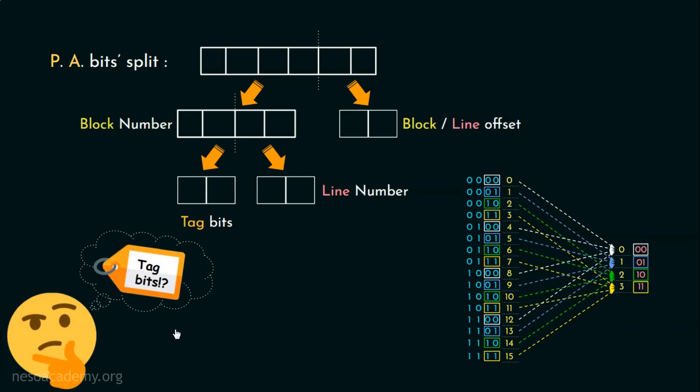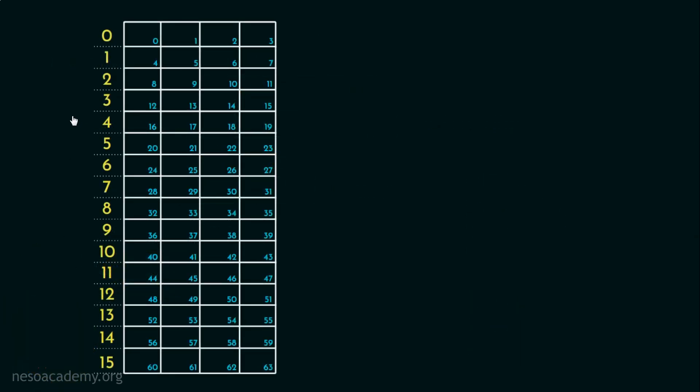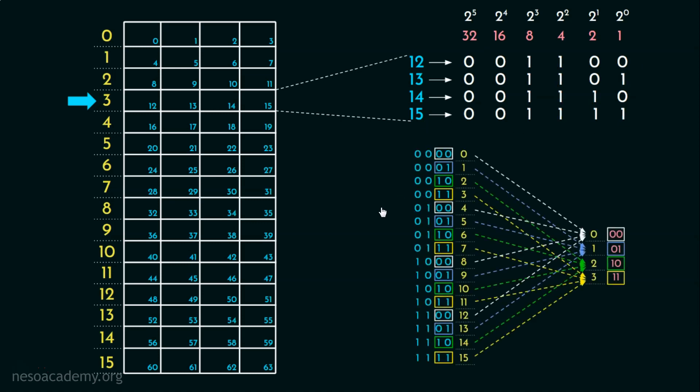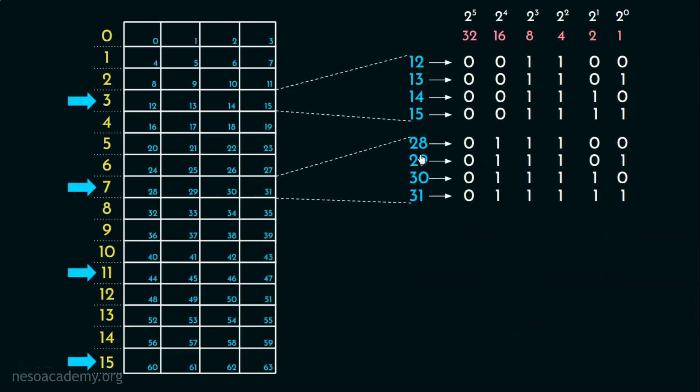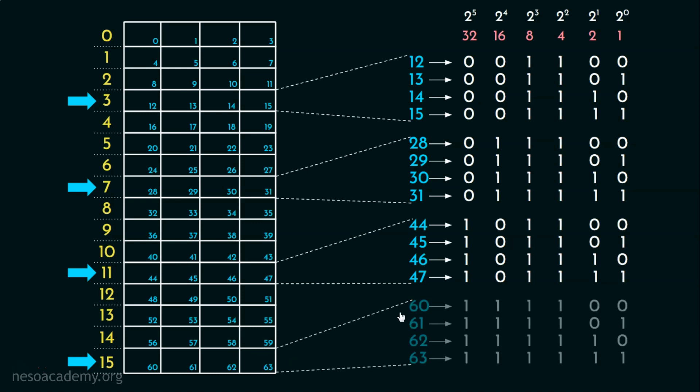Now let's try and understand why these are called tag bits. Let's select block number 3 and analyze its contents: 12, 13, 14, 15 and these are their 6 bit binary equivalents. We witness that like block number 3, block numbers 7, 11 and 15 are also mapped onto the same cache line, that is line number 3. So, let's observe their contents as well. Block number 7's got 28, 29, 30 and 31. 11 has 44, 45, 46 and 47, and for 15 there is 60, 61, 62 and 63. Now observe this. For block number 3, the tag bits are 00. For block number 7, the tag bits are 01. For 11, the tag bits are 10 and for 15, it's 11. So do you understand the pattern? Actually these bits will identify which one of the blocks is present in the cache. Basically they work as the tags and thus the naming.